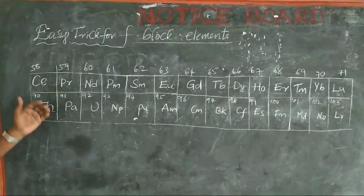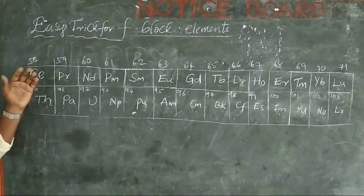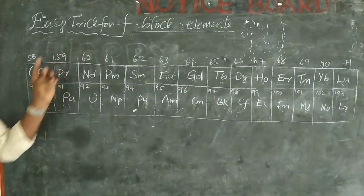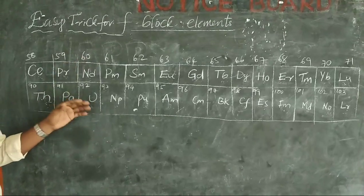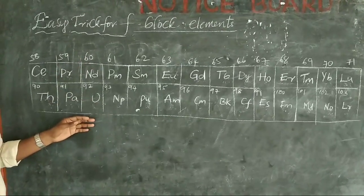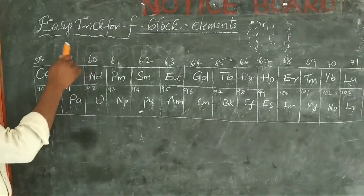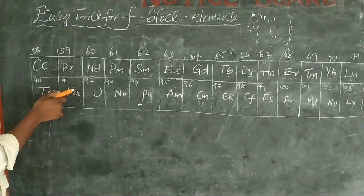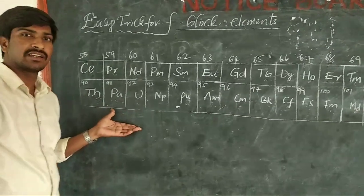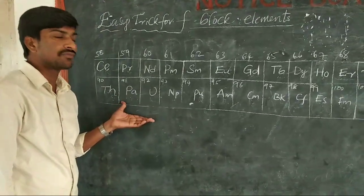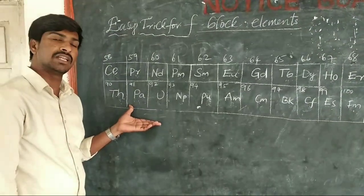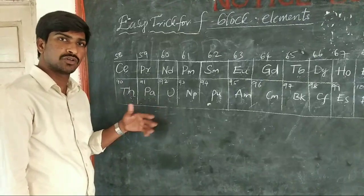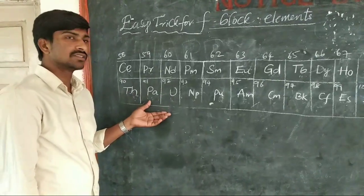If you want to remember the story, listen to it once again and you will get clarity. So this is a-block element — this is the easy trick. This type of easy trick we will explain in the next class as well. Thank you.